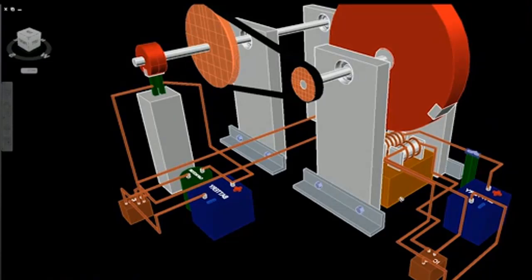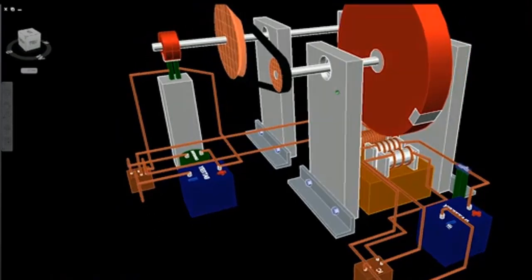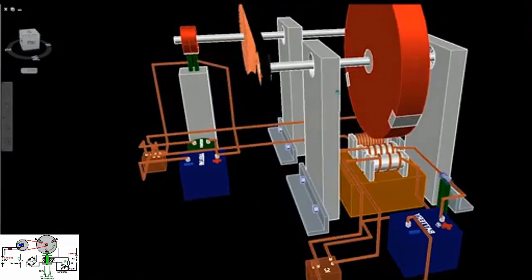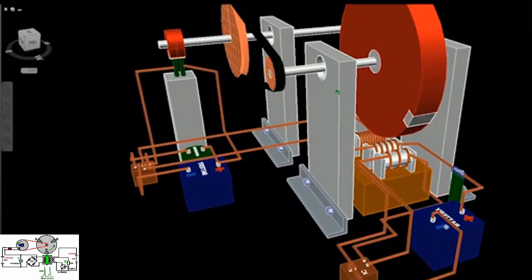At its core lies a flywheel, magnets, coils, and essential circuitry, all working in harmony to generate and transfer energy. Here is a detailed breakdown of its components and operations.